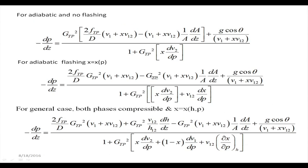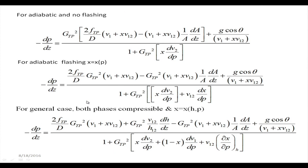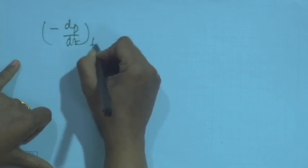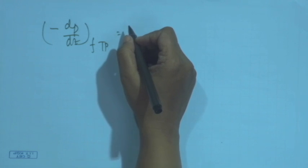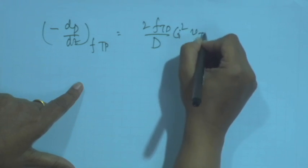We continue with the discussion of finding out the hydrodynamics of flow using the homogeneous flow model. As already mentioned, the homogeneous flow model is given by this particular equation — the general equation for cases where both phases are incompressible. The two-phase frictional pressure gradient can be expressed as 2f_tp/d × G² × v_tp.